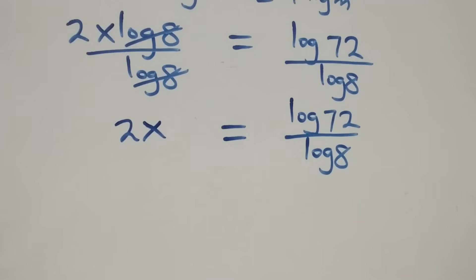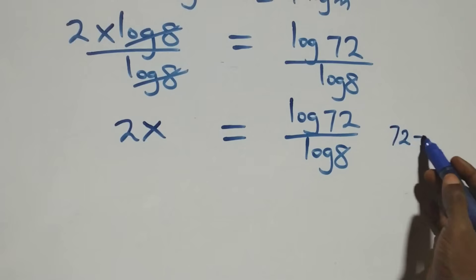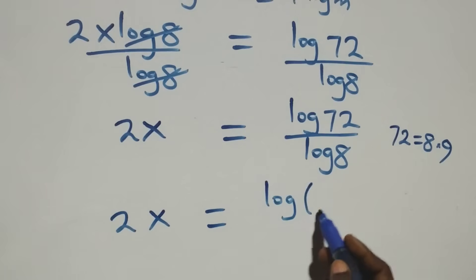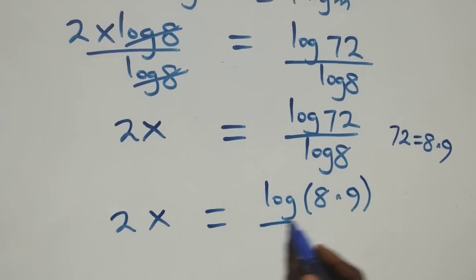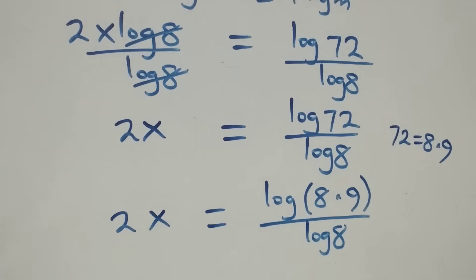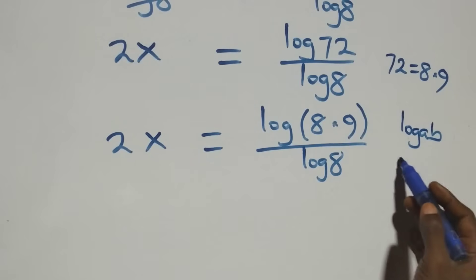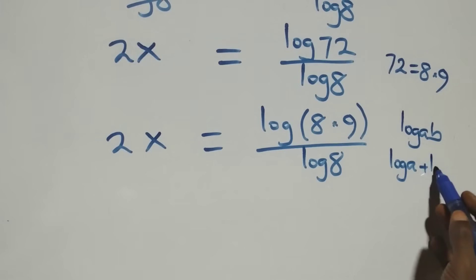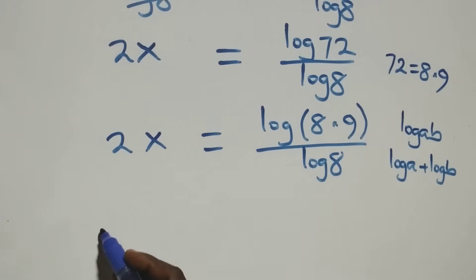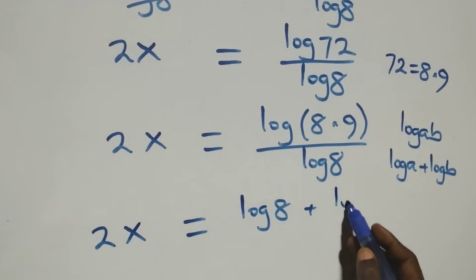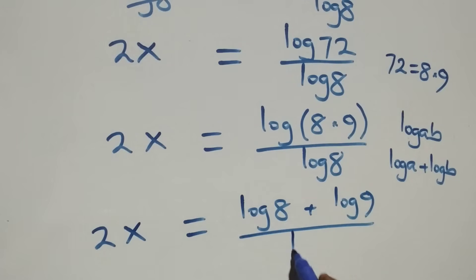Next, we apply the law of logarithms: log(a times b) equals log a plus log b. Since 72 equals 8 times 9, we have log 72 equals log 8 plus log 9. So 2x equals log 8 plus log 9, all over log 8.